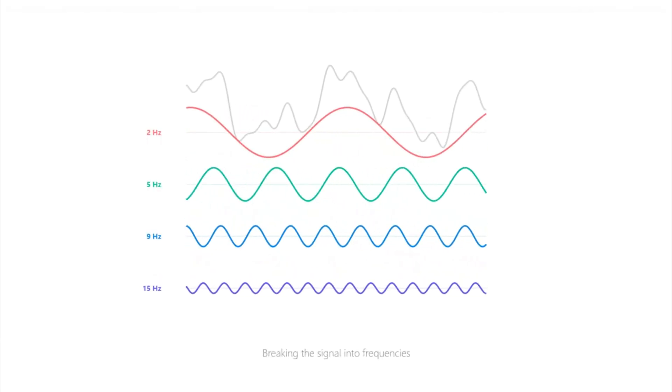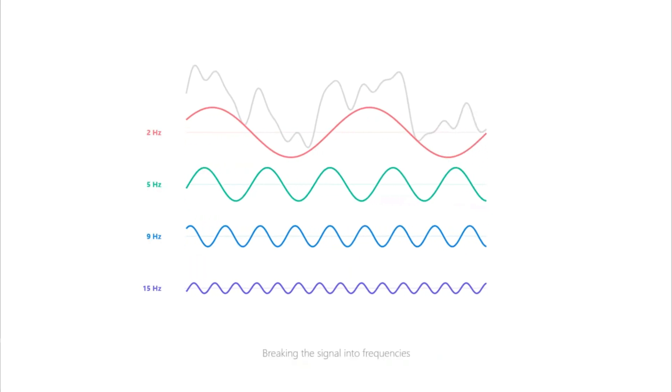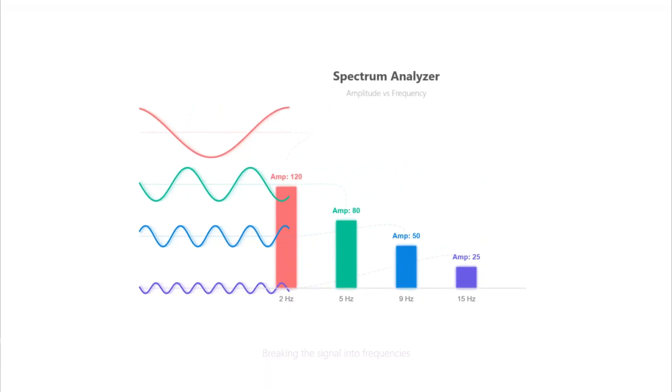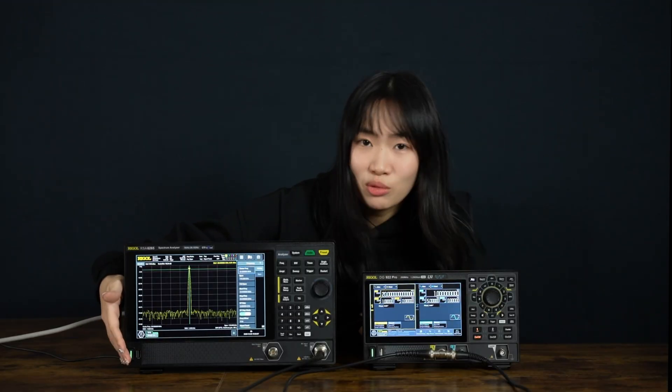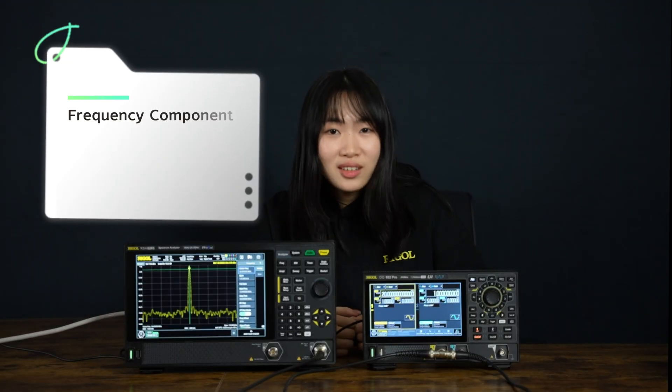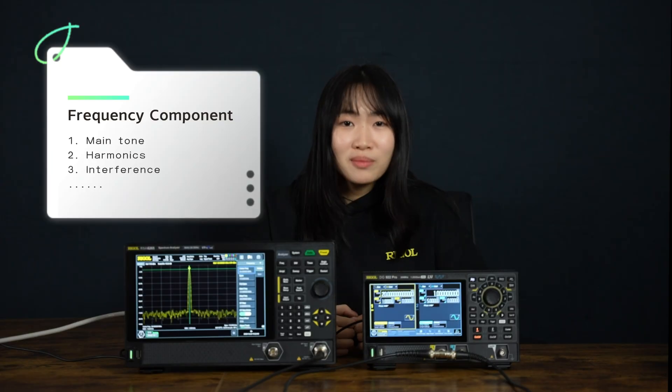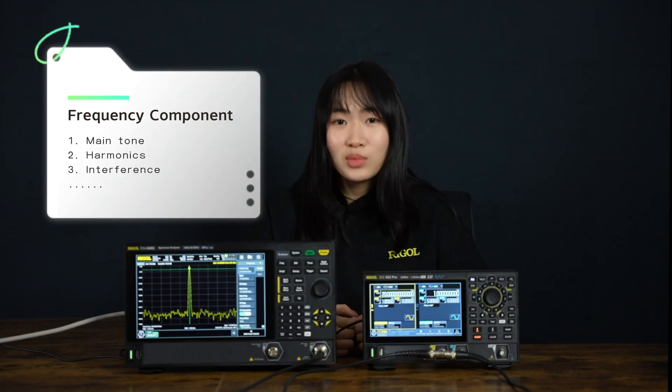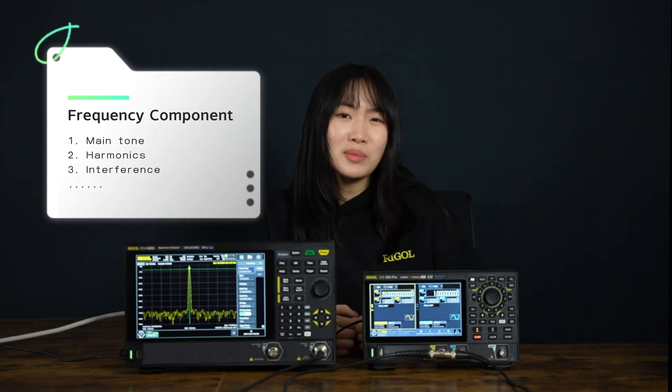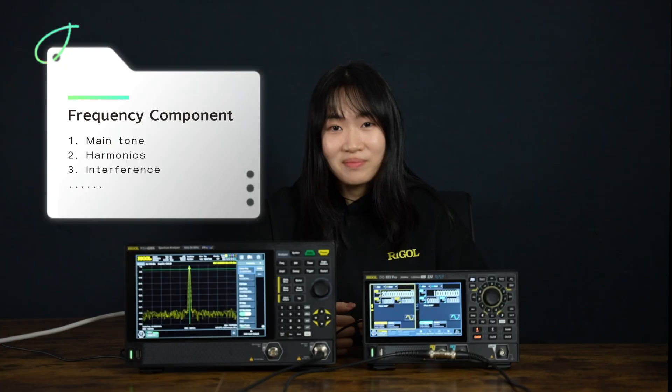And the spectrum analyzer shows the other side of the story — the frequency domain. It doesn't locate voltage over time. Instead, it breaks the signal into all the frequencies inside it and shows the amplitude of each one. Every peak you see on the screen represents a frequency component: the main tone, the harmonics, interference, noise, and sometimes signals we didn't even know were there.